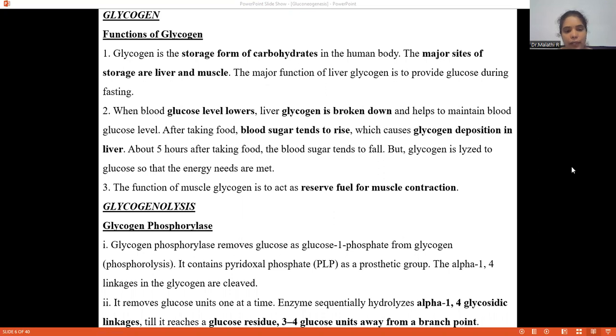Glycogen phosphorylase is an enzyme which removes glucose as glucose-1-phosphate from glycogen. It contains pyridoxal phosphate as a prosthetic group. The alpha-1,4 linkages in the glycogen are cleaved.